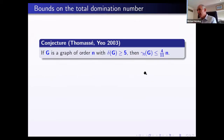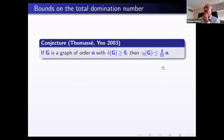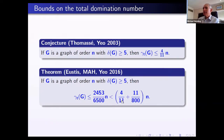In their paper, Thomas and Yeo conjectured that for minimum degree at least five, the total domination number is at most four-elevenths of the order. We tried for many years — working with Michael Dorfling and others — but the best result we have to date is four-elevenths plus a small correction of just under 11/800. We cannot prove this conjecture at the moment.